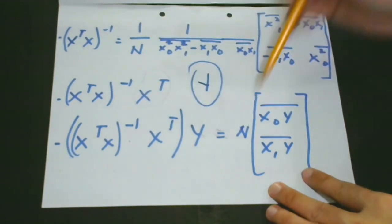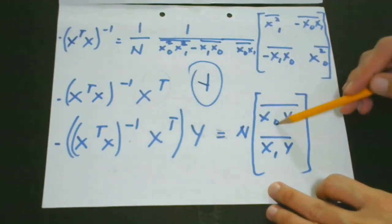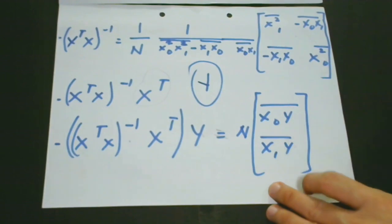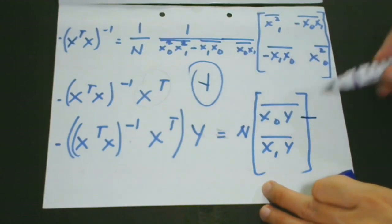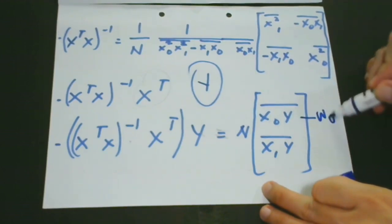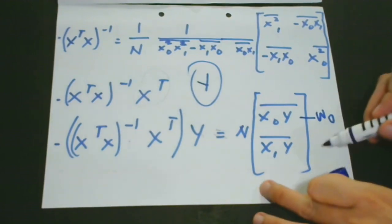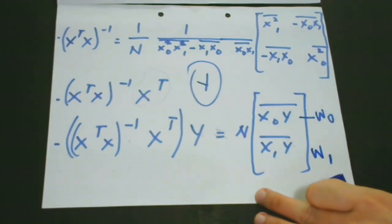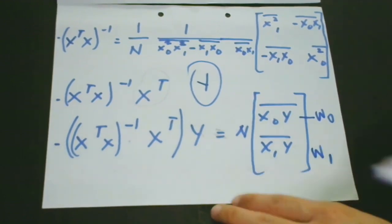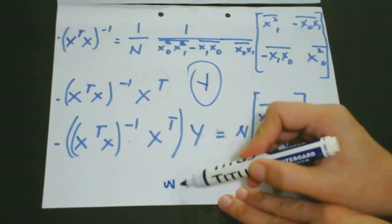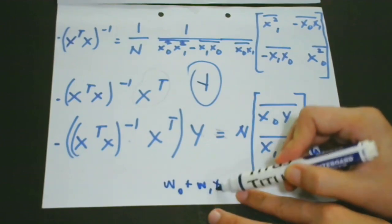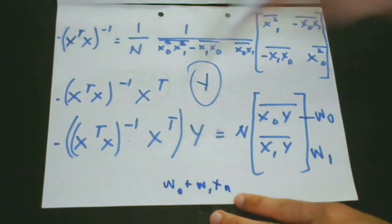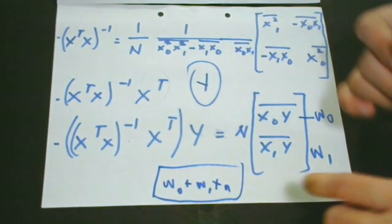So after we get this, then we are going to get the average. Then we have X0Y, then X1Y. And then this actually represents our first parameter which is w0, and then this one represents our parameter which is w1. So it means to say our equation or linear model would be w0 plus w1, we have Xn. So this would be our final product.